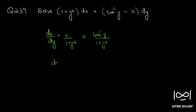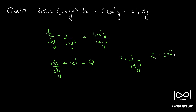The standard form is dx/dy + x·P = Q, where P and Q are functions of y alone. Here, P = 1/(1 + y²) and Q = tan⁻¹y / (1 + y²).